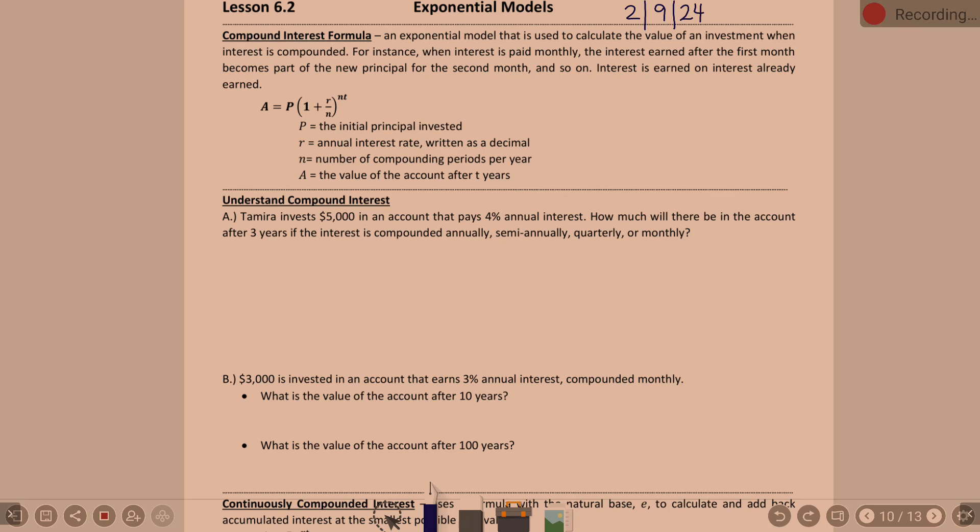N is a new part today. And N is your number of compounding periods per year. How many times throughout the course of one year is interest compounded? And that will depend on do they tell us monthly, quarterly, annually, semi-annually, daily, whatever the case might be. And then A, the value of the account after T years.